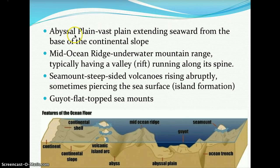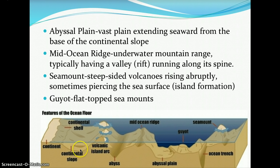The abyssal plain is a vast plain extending seaward from the base of the continental slope. So here you have the continental shelf, continental slope, continental rise, and down here would be the abyss.